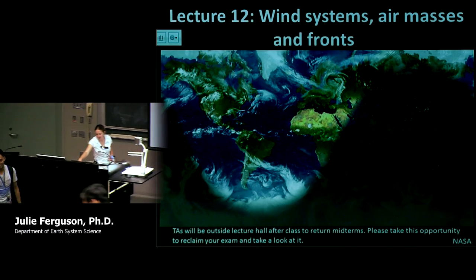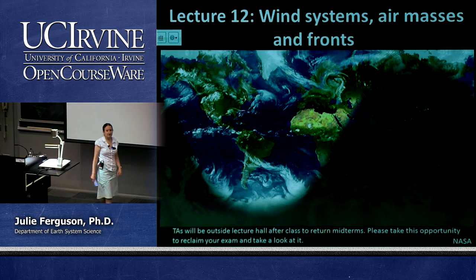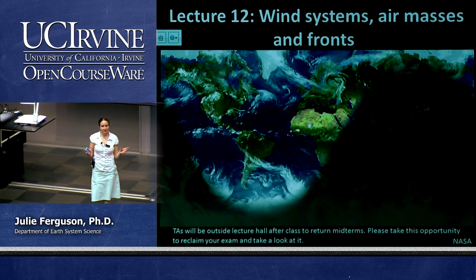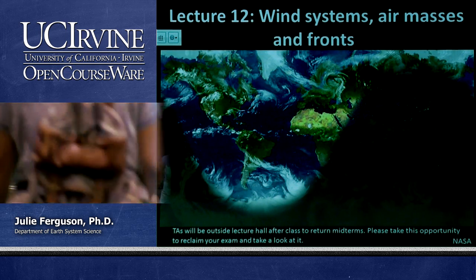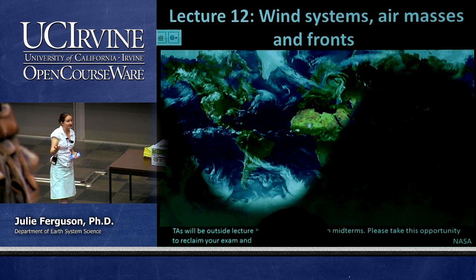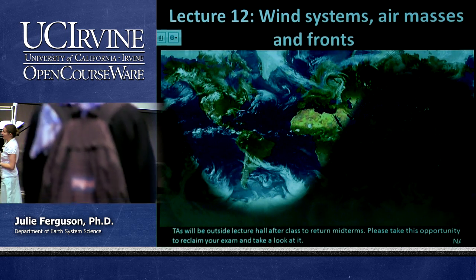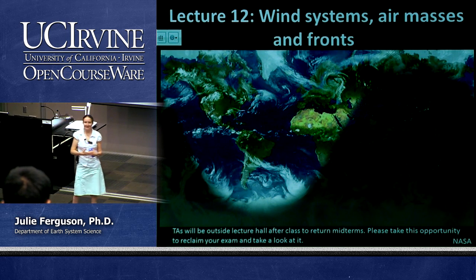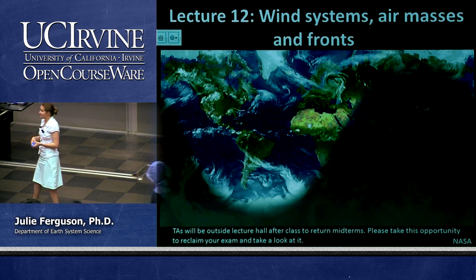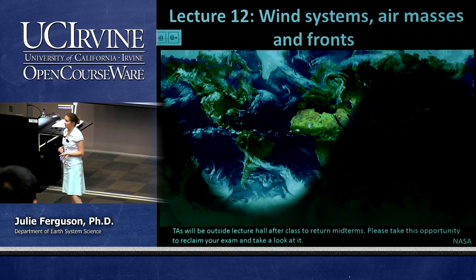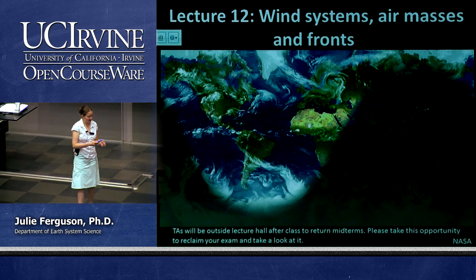Alright everybody, if you want to find a seat we will get going on our lecture today. We're going to cover wind systems — local wind systems like monsoons, land-sea breezes, and Santa Ana winds, which is very appropriate today. We're also going to start thinking about air masses and fronts. At the very end today we're going to forecast our weather for the next five or six days and see when our Santa Ana winds are going to come to an end.